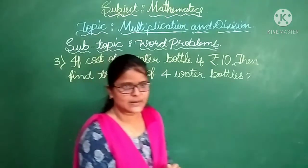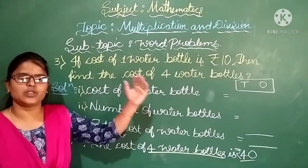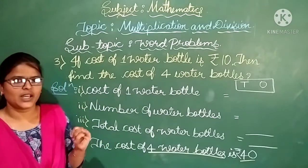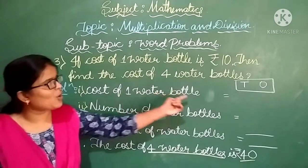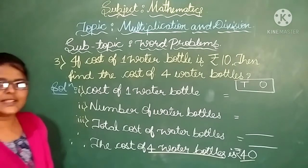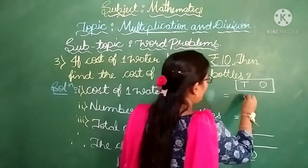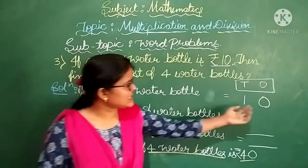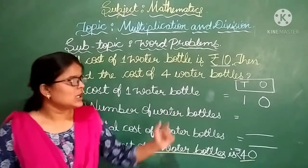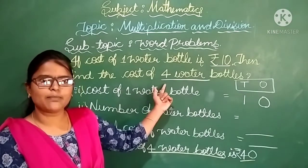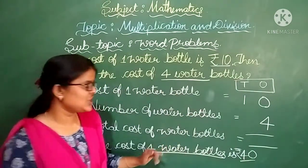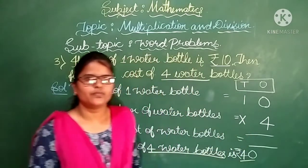Before solving, understand the question first: 1 water bottle costs 10 rupees — then what is the cost of 4 water bottles? First point: cost of 1 water bottle is 10 rupees. 10 is a 2-digit number, so write 0 under the 1s column and 1 under the 10s column. Second point: number of water bottles is 4 — a single digit number, write 4 under the 1s column. Put the sign of multiplication.